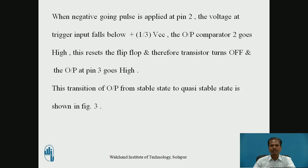When a negative going pulse is applied at pin number 2, the trigger input of IC555, the voltage at trigger input falls below one-third VCC, so the output of comparator 2 goes high. This resets the internal flip-flop of IC555, and therefore the internal discharge transistor turns off, so the output at pin number 3 goes high — that is, the quasi-stable or temporary stable state of the monostable multivibrator. This transition of output from stable state to quasi-stable state is shown in figure 3.